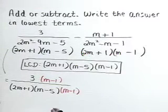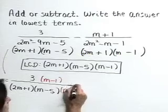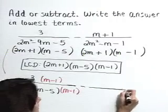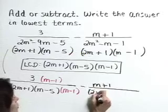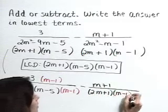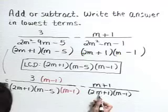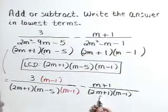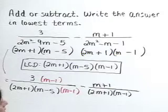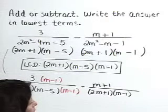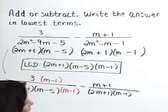Now as we look at our second fraction, the m plus 1 over 2m plus 1 times m minus 1. Comparing its denominator to the LCD, we see that it is missing the m minus 5 factorization. So let's multiply both the numerator and denominator by m minus 5.